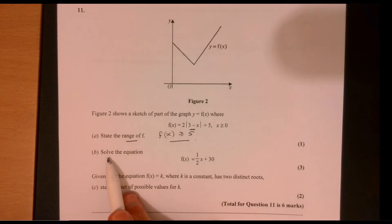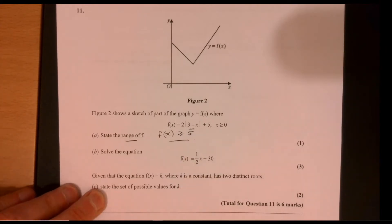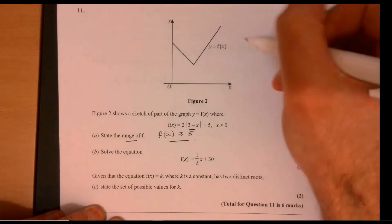Now, part b. It tells us our function is equal to half x plus 30. Now, modulus. So this could be, so we need to write this out as two possible ideas. So let's just write down where we are at the moment.